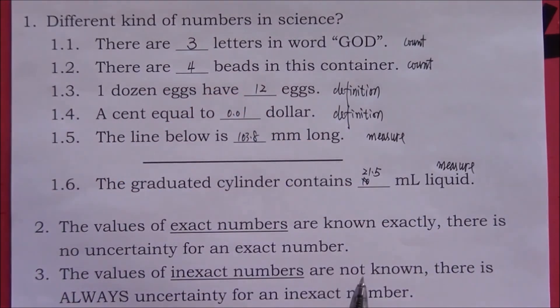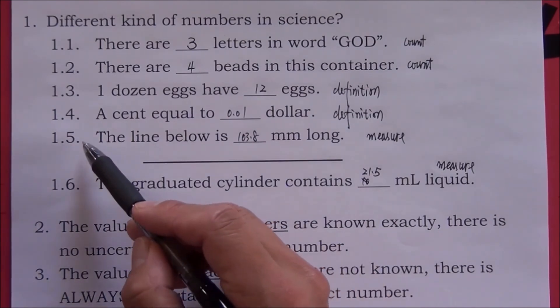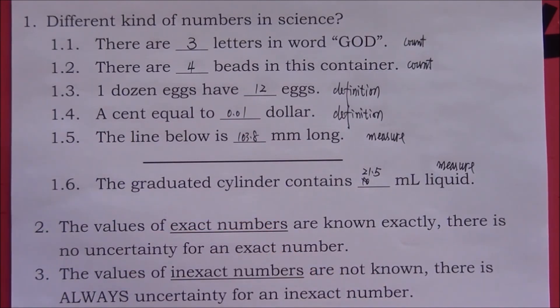The first four numbers are examples of exact numbers. The values of exact numbers are known exactly. There is no uncertainty for an exact number. The last two numbers are from measurements. The values of inexact numbers are not known exactly. There is always uncertainty for an inexact number. Number five and number six are examples of inexact numbers.